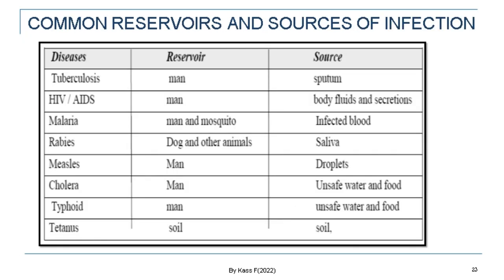This source of infection normally forms the basis for the effective agent to infect humans. This table shows some of the common reservoirs and sources of infection. Diseases listed include tuberculosis, HIV/AIDS, malaria, rabies, measles, cholera, typhoid, and tetanus. For each disease, there is a reservoir and a source. For example, for tuberculosis, the reservoir is humans, and the source of infection is sputum. For tetanus, the main reservoir is soil, and the source of infection is also soil.